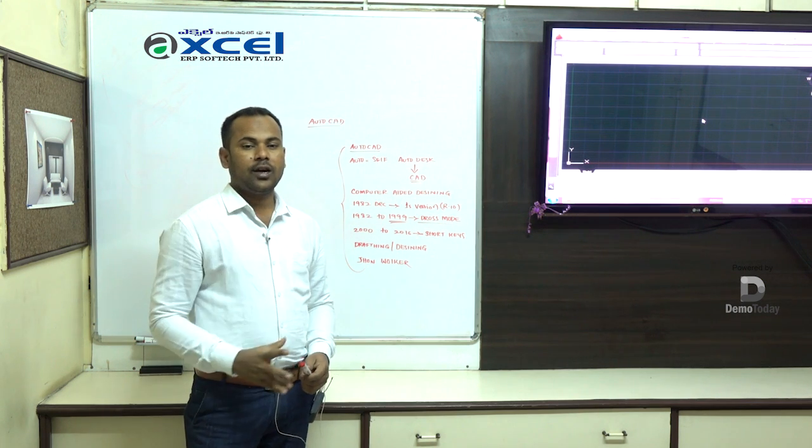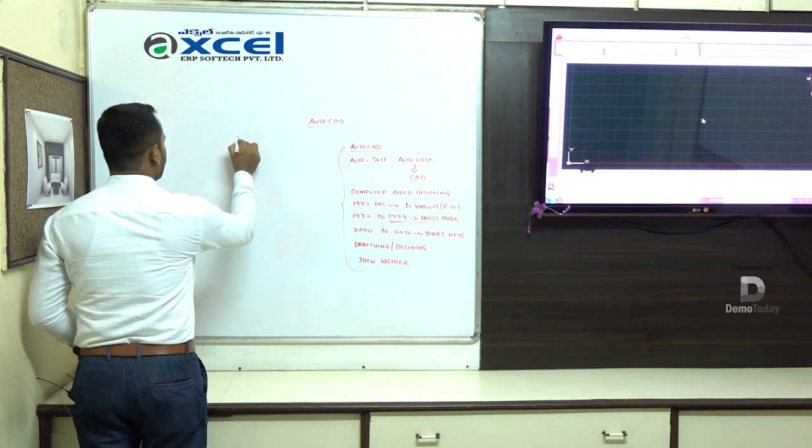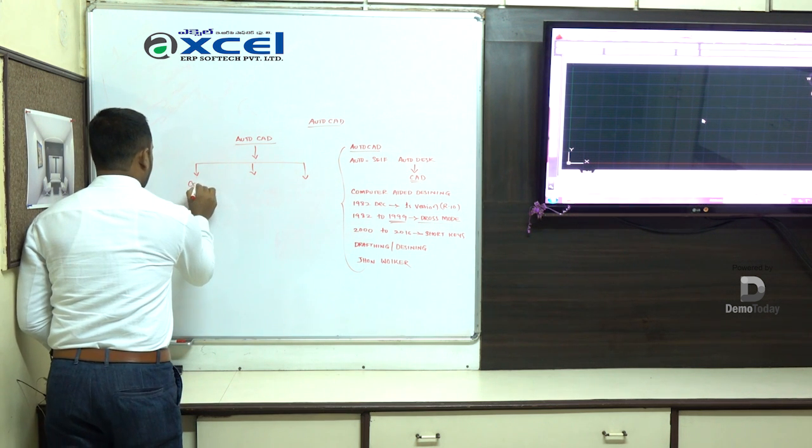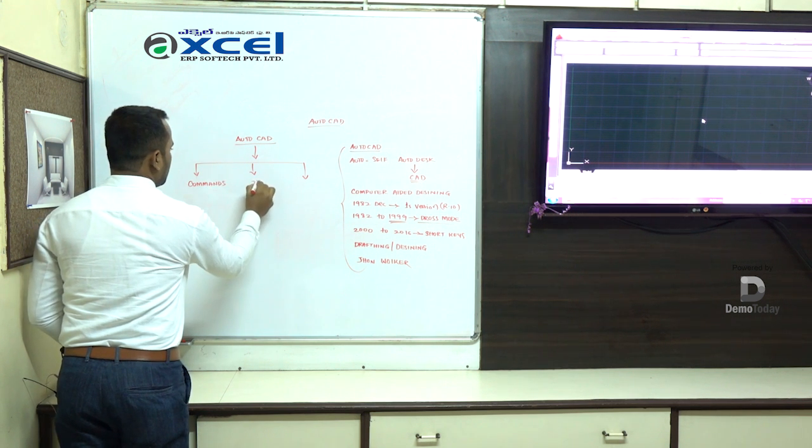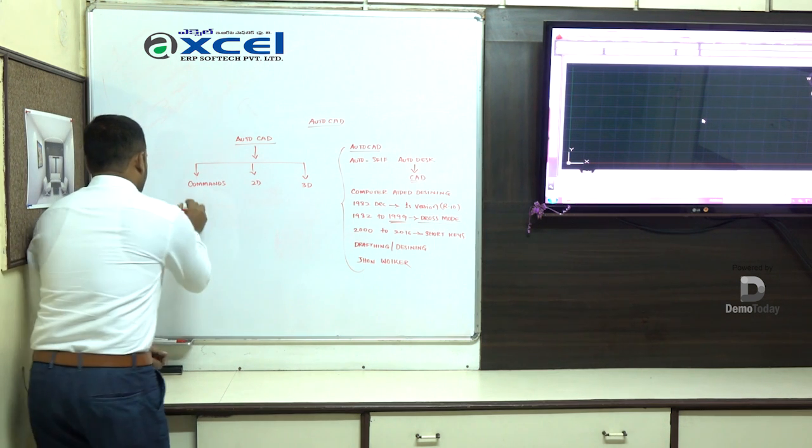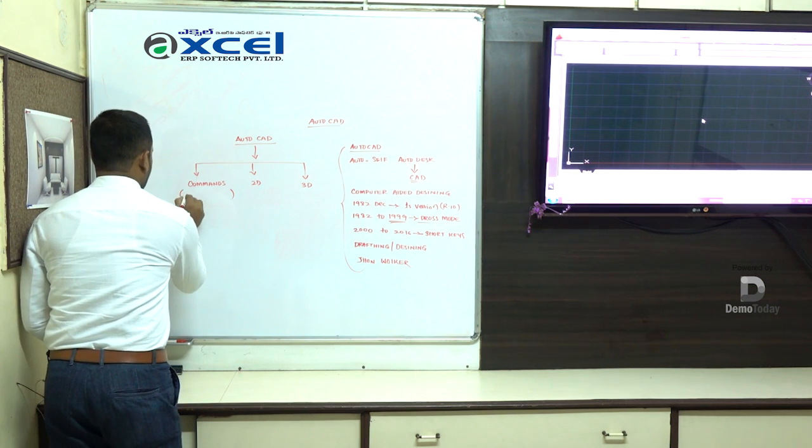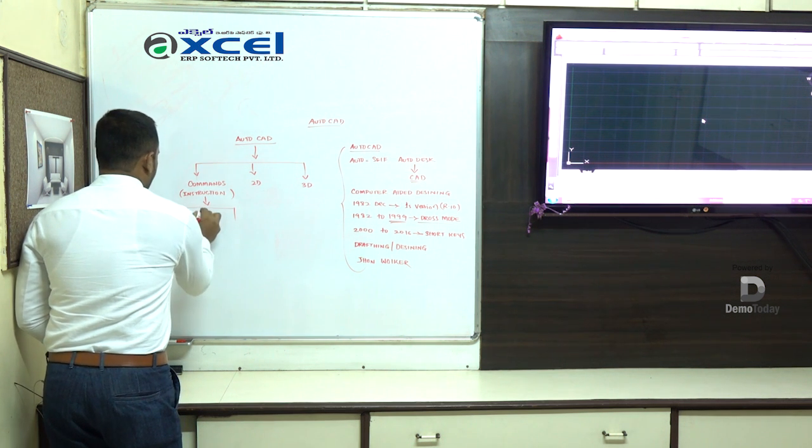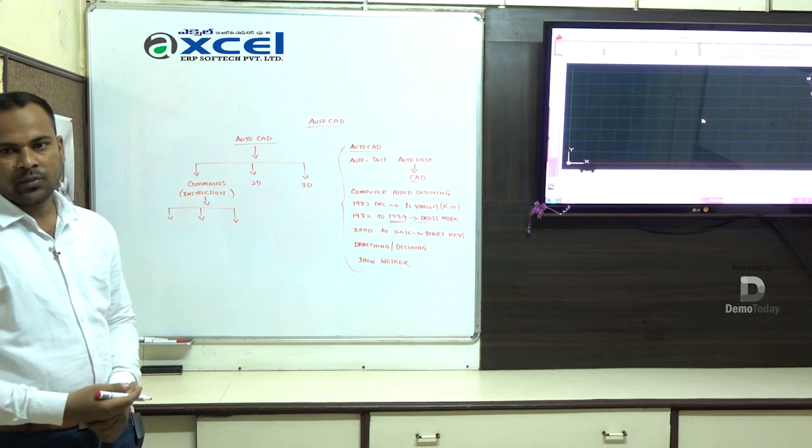If you want to learn AutoCAD, there are three streamings. First streaming is commands, second is 2D, and third one is 3D. What is the meaning of commands? Commands means instructions. In commands, we have three types of commands.